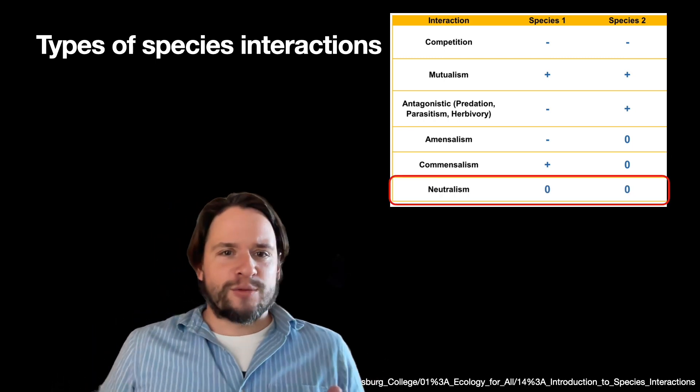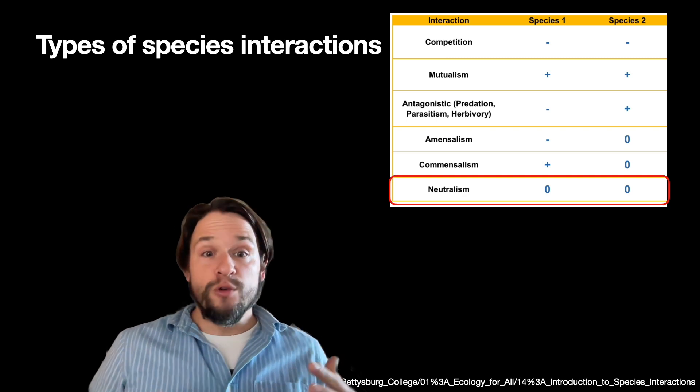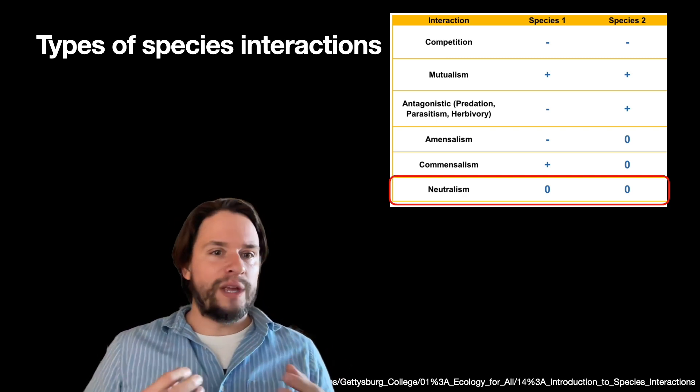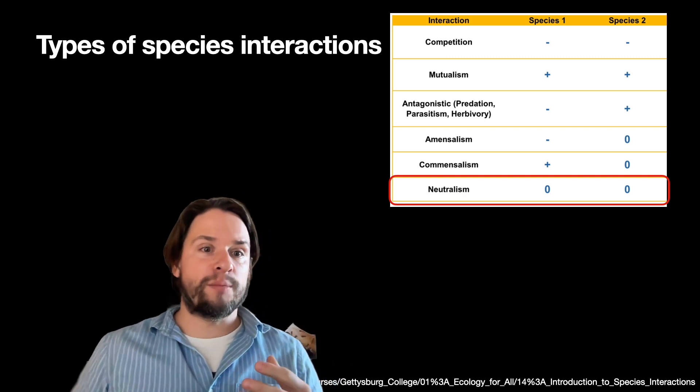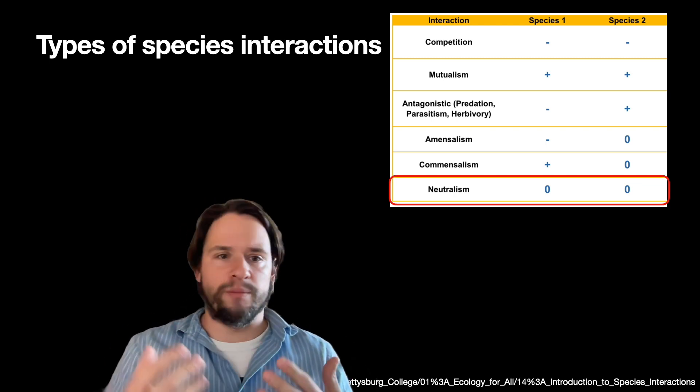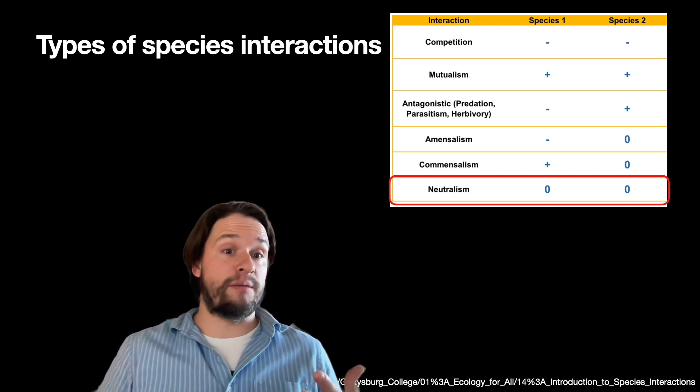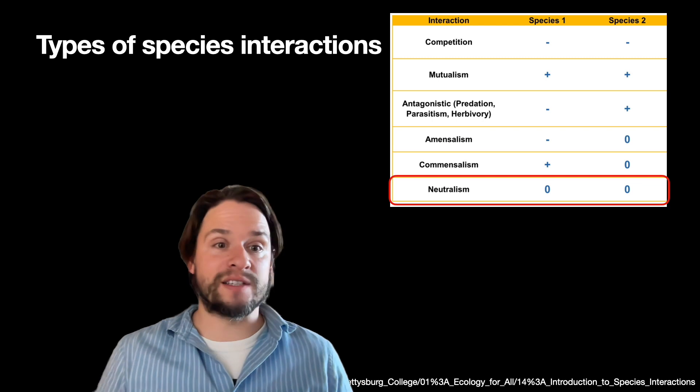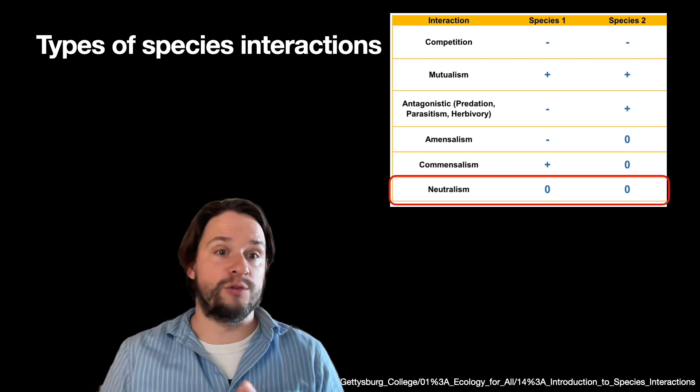And the last, in some ways sort of bookkeeping, but we can think of neutralism being no real substantial effects on either partner but two species that coexist. So for example, two species that are in the same environment but aren't strongly positively or negatively interacting would be neutralism.